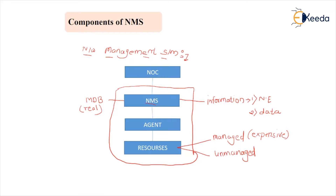One more component related to NMS is the NOC. Whenever a network gets a failure, NMS, agents, and resources all get failures. Who is responsible to restore the service? The answer is the Network Operation Center. So beyond the network, the component related to the network management system is NOC. This covers the architecture of one network and one NOC.